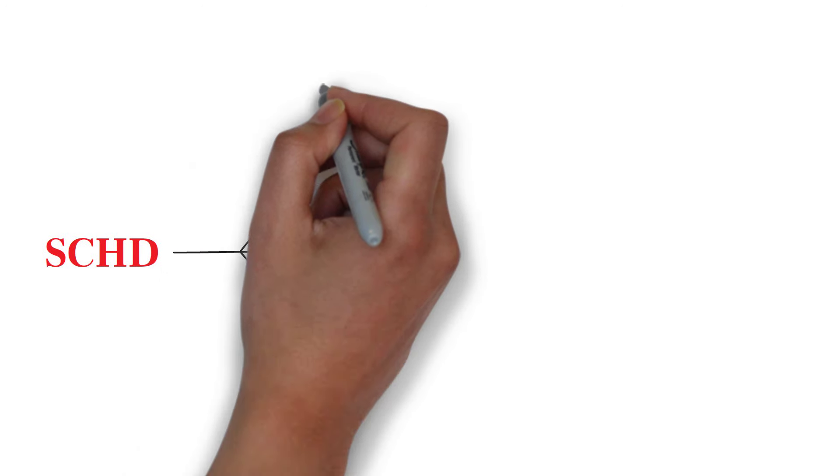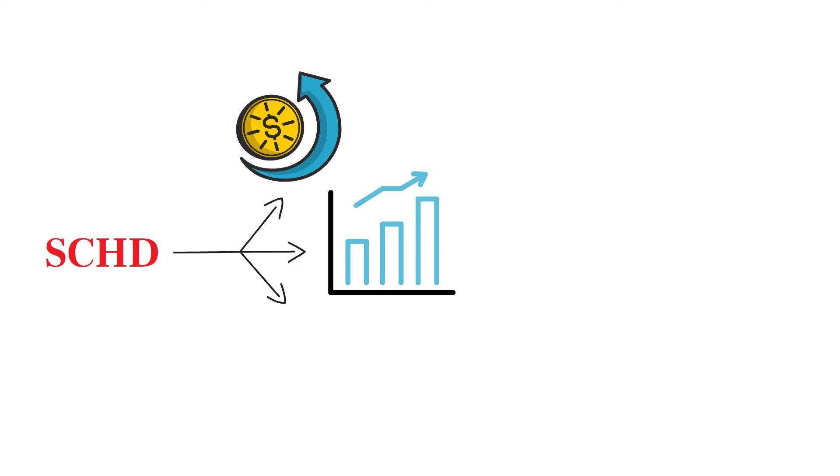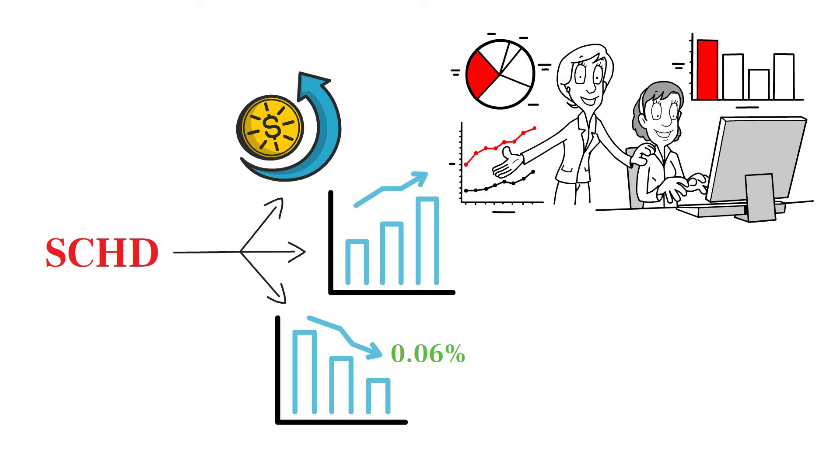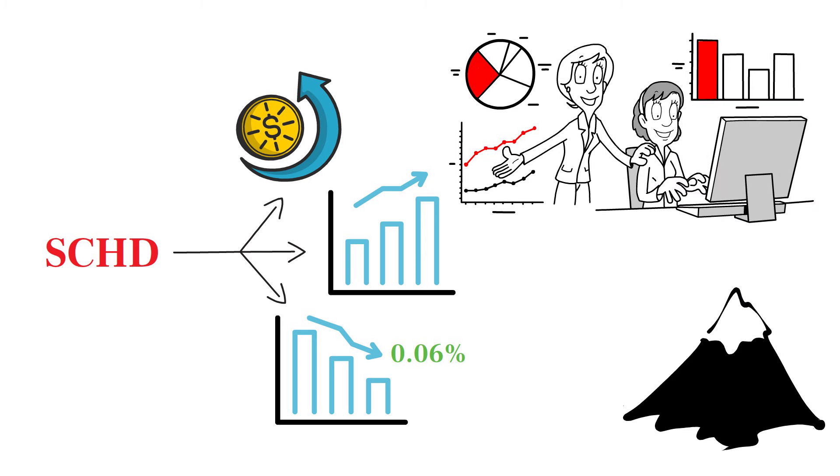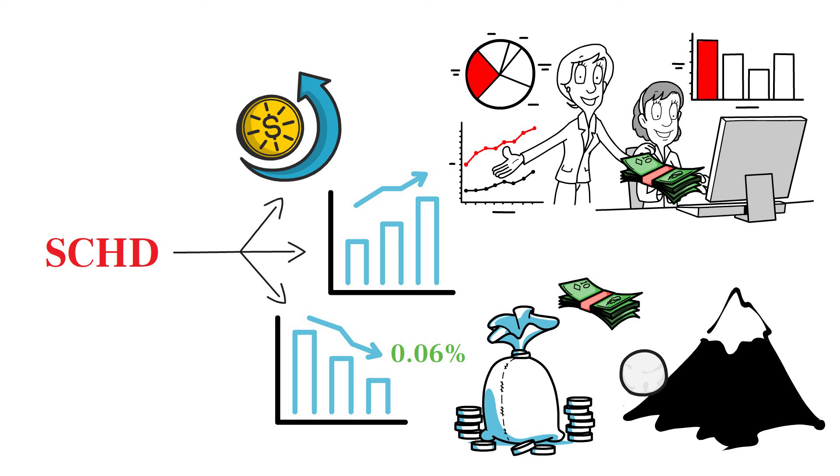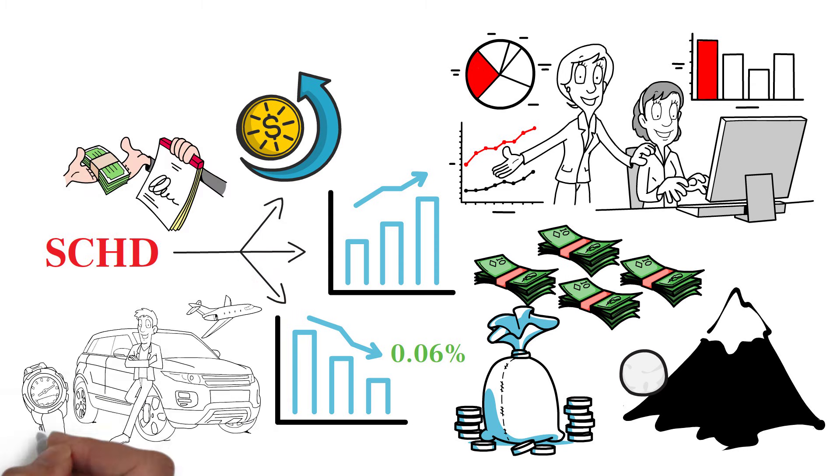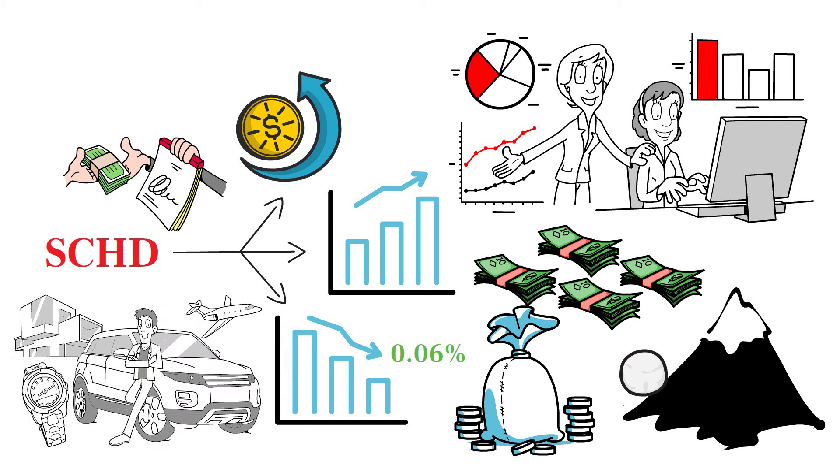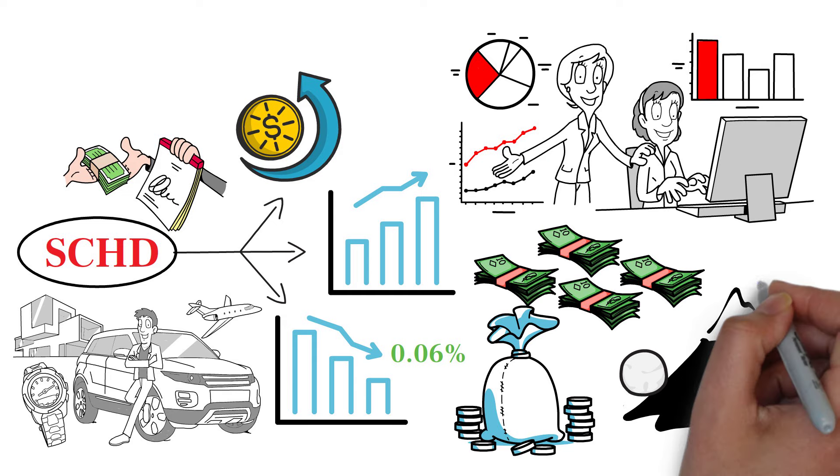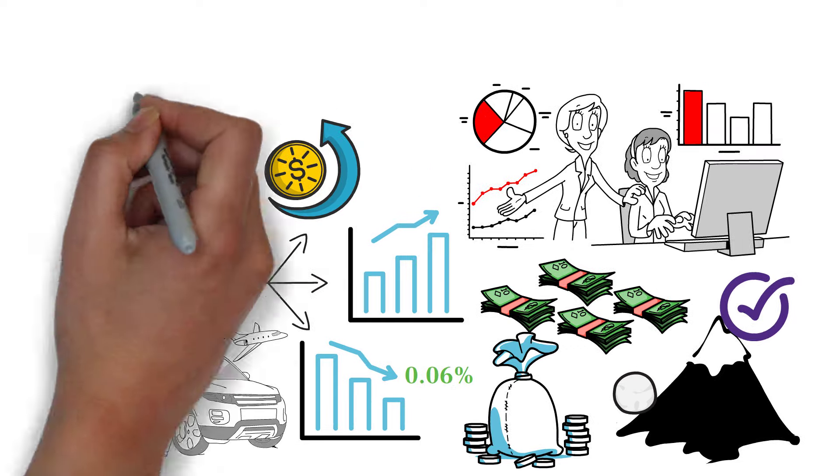To recap, SCHD offers a unique combination of market-beating returns and robust dividend growth, all with a low expense ratio of just 0.06%. Its stringent selection criteria ensure you're investing in high-yielding stocks with solid financial health and a reliable dividend payment history. The dividend snowball effect, which involves reinvesting dividends to buy more shares, can significantly amplify your wealth over time through the power of compounding. There's no better time than now to start your investment journey. Whether you're aiming for financial independence or looking to build a steady stream of income, investing in SCHD and leveraging the dividend snowball effect can set you on the path to achieving your financial goals.